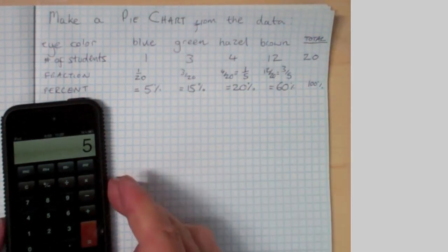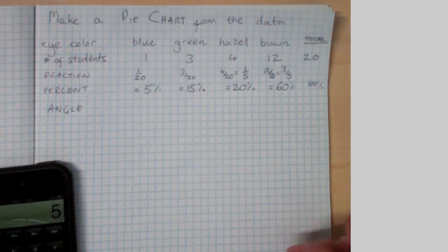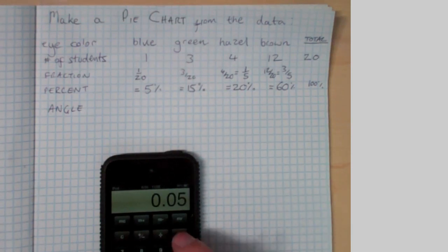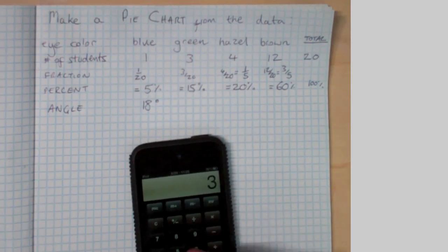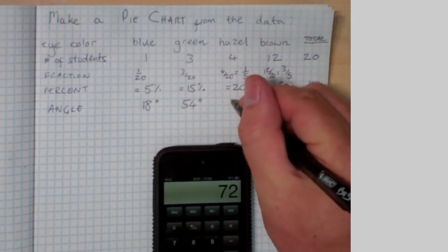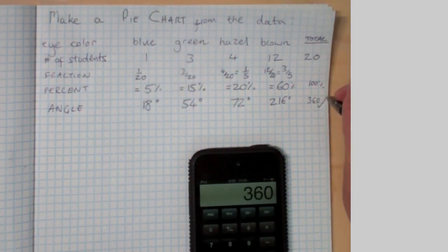To figure out the angle we can take that fraction. Five percent, don't forget, is 0.05 and multiply that by 360 degrees. That's the full circle and we get 18 degrees as the slice of pie for blue. Repeat the calculation for green, 54 degrees, hazel 72 degrees, and brown 216 degrees. We should do a quick check here and the total of everything should be 360 degrees. That's correct.